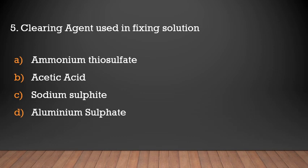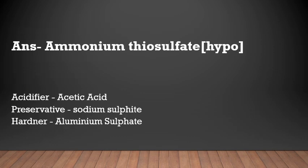Clearing agent used in fixing solution. Options: ammonium thiosulfate, acetic acid, sodium sulfite, aluminium sulfate. Answer: ammonium thiosulfate, also known as hypo. It acts as the clearing agent in the fixing solution.